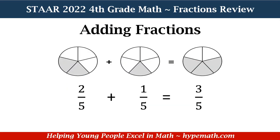So let's review adding fractions. We have on our far left side a circle that is divided into five equal parts, and two of those parts are shaded. My fraction is two-fifths. Plus, our second or middle circle has five equal parts as well, and one is shaded. My fraction is one-fifth. Because my denominators are the same, all I need to do is add my numerators and keep the denominator. Two plus one is equal to three, so three-fifths is my answer.